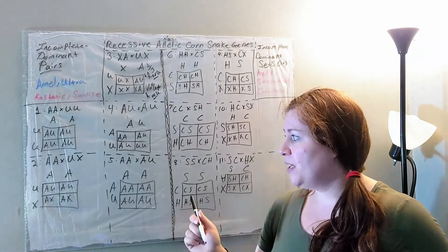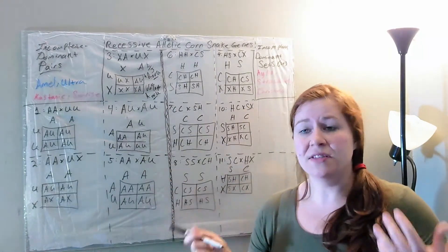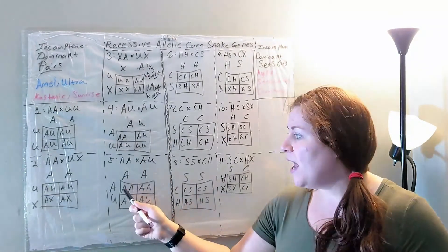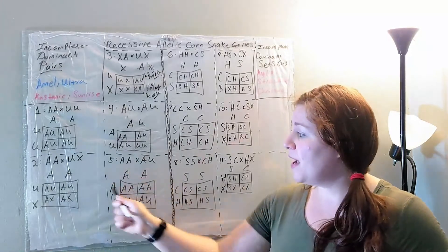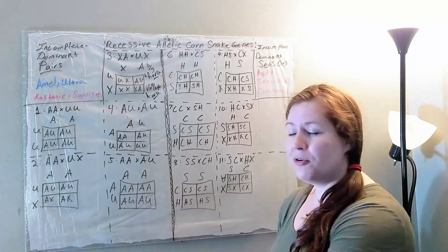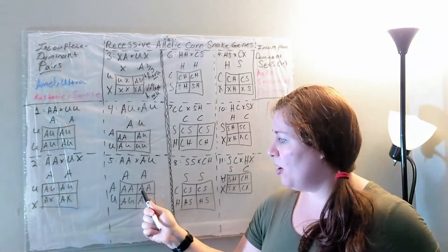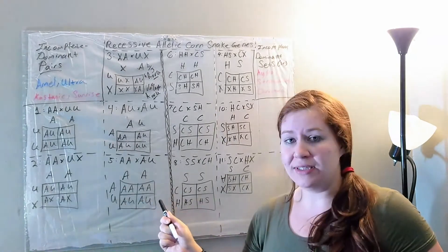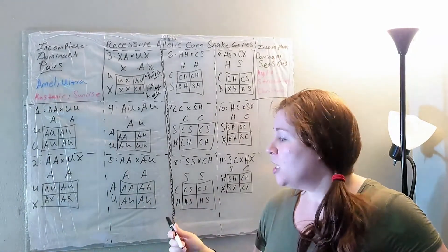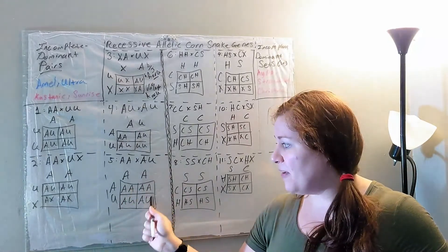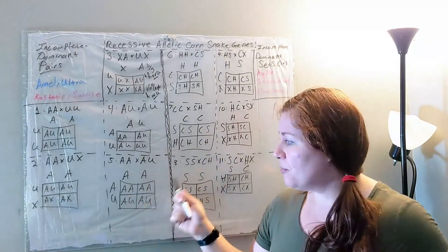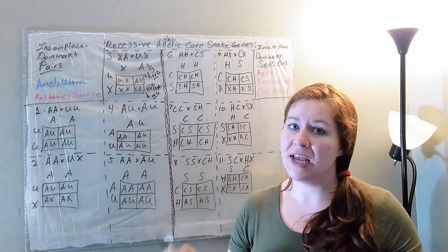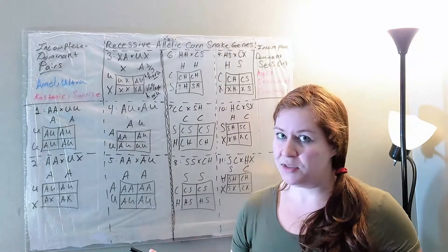Pair number five is an Amel to an Ultramel — probably my favorite breeding because it's pretty straightforward. You get half Amels and half Ultramels. Since we have a homozygous Amel, all babies are going to be at least het Amel. With an Ultramel, half of them will have Amel on one side and half will have Ultra on the other side. So you get half Amel and half Ultramel, with those Amels having no chance of being het Ultra.